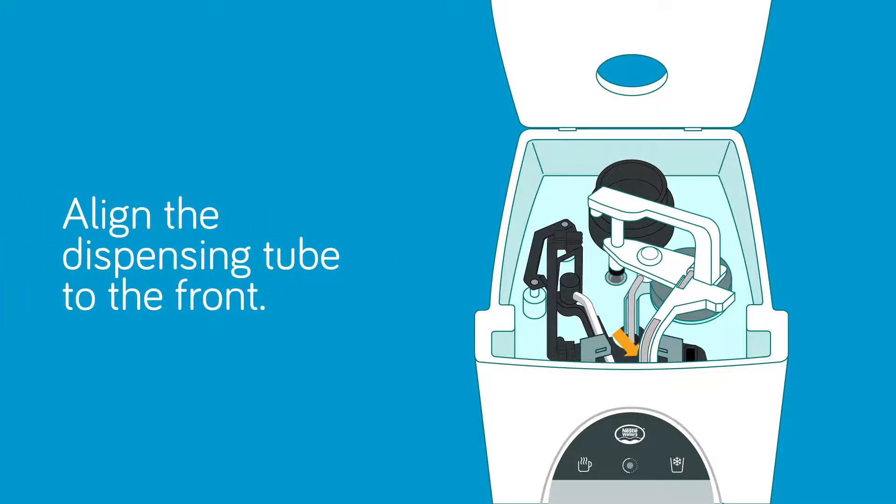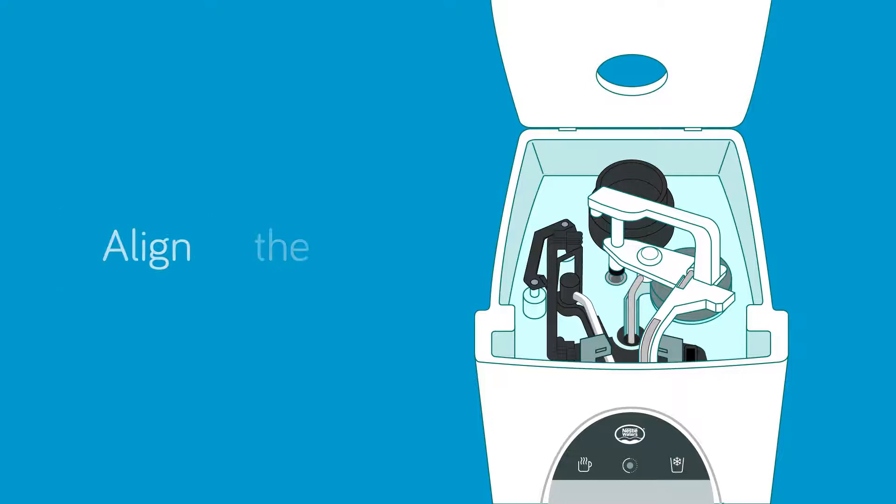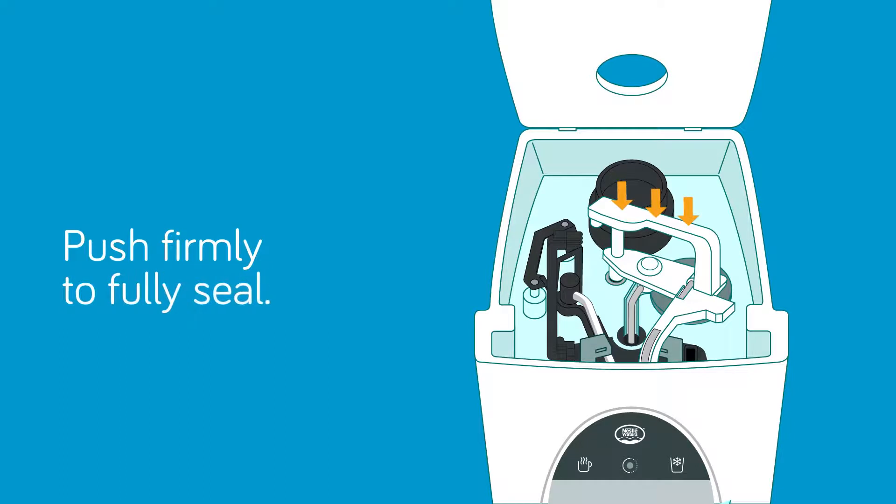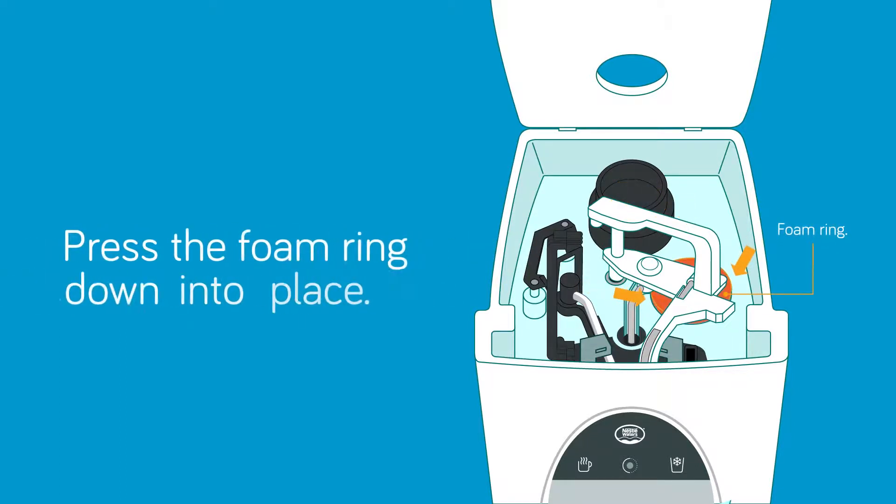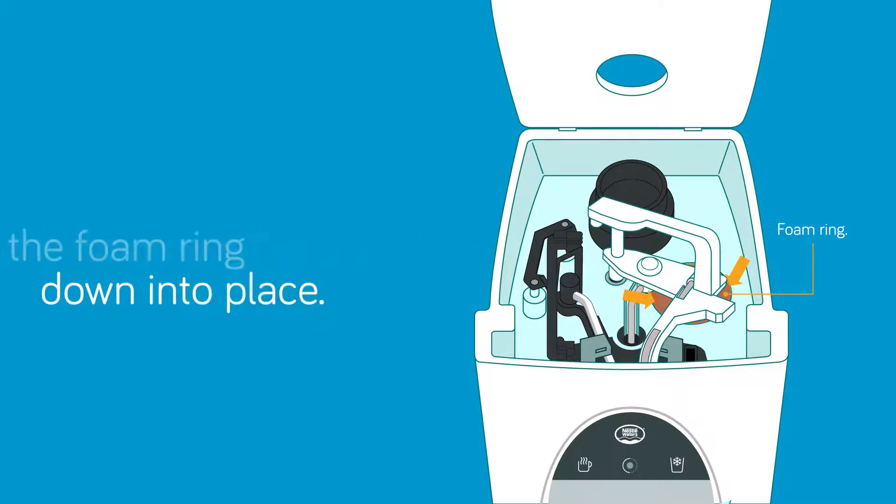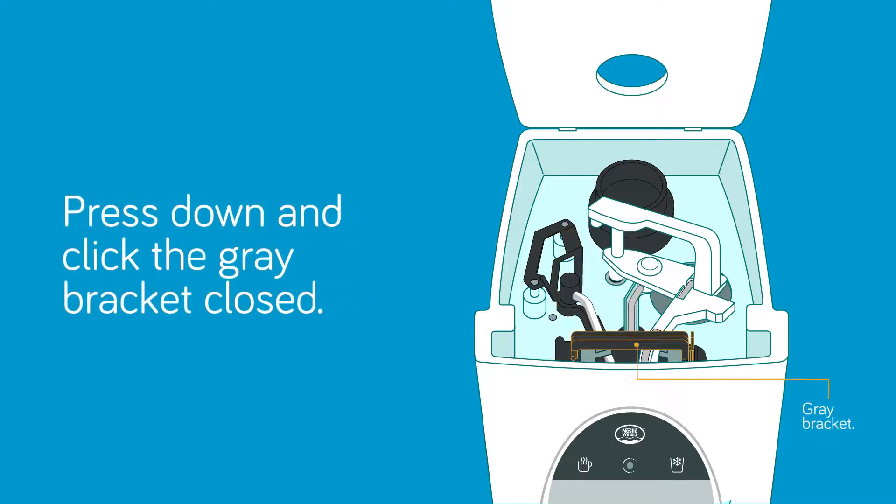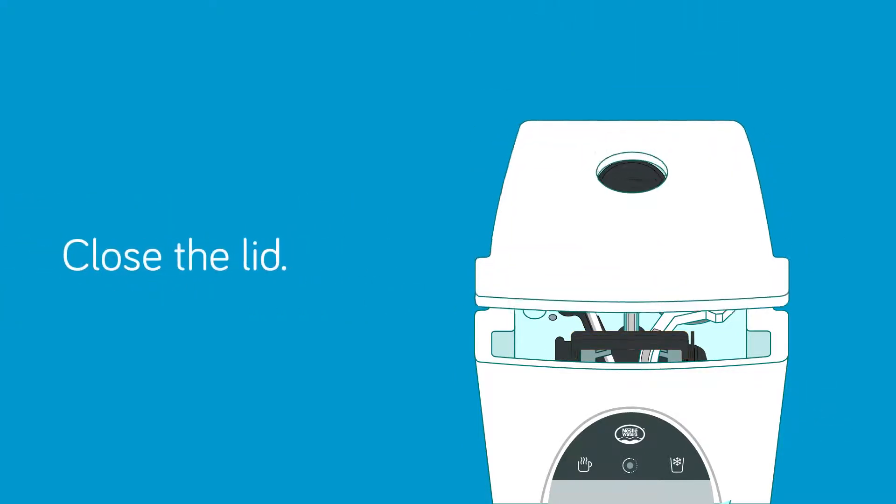Then align the dispensing tube to the front and align the black rubber ring to the port below it. Once all components are in place, push firmly to fully seal and press the foam ring down into place. Press down and click the gray bracket closed. Then close the lid.